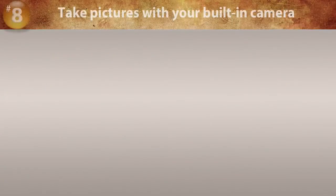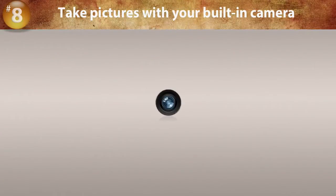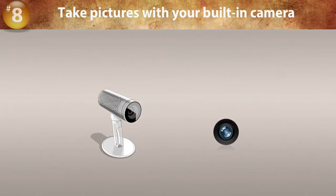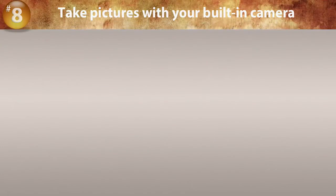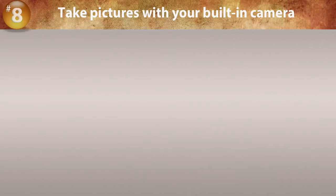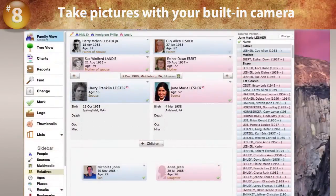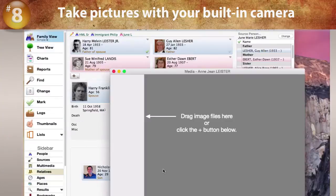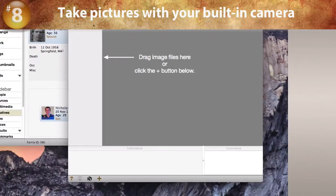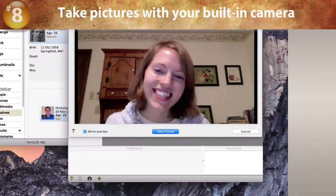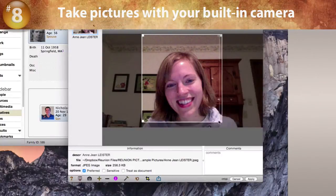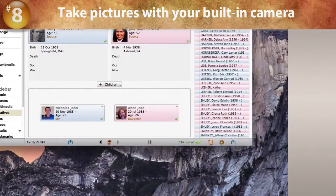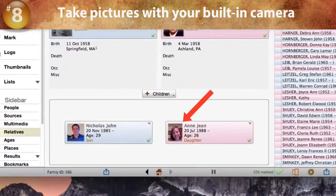Reunion 11 supports your Mac's built-in camera or a USB-connected camera to take pictures from within Reunion. This feature makes it easy to get updated pictures of family members added directly to their records in Reunion. Open the media window, click the camera icon, take the picture, save it, crop it if necessary, and there it is inside the person's button.